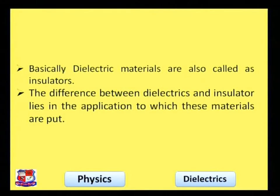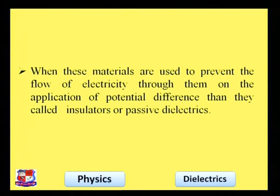What is the basic concept of a dielectric? Dielectric materials are called insulators. But what is the main difference? The difference between dielectric material and insulator lies in its application. When materials are used to prevent the flow of electricity through them upon application of a potential difference, then they are called insulators or passive dielectric materials. Insulators are also called passive dielectric materials.